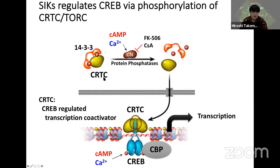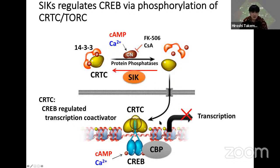How does CRTC activate CREB? In summary, CRTC is usually localized in the cytoplasm in a phosphorylated form. Cyclic AMP and calcium signaling activate dephosphorylation of CRTC. Then CRTC moves to the nucleus, binds to CREB, and activates target gene transcription. However, SIK is induced, phosphorylates CRTC in the cytoplasm, and as a result CRTC is captured in the cytoplasm — not in the nucleus — and transcription is inhibited.